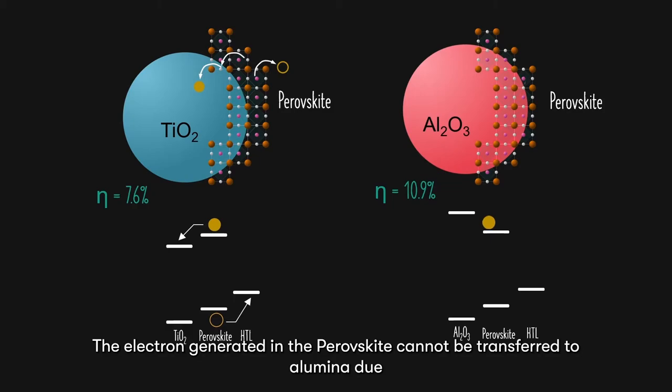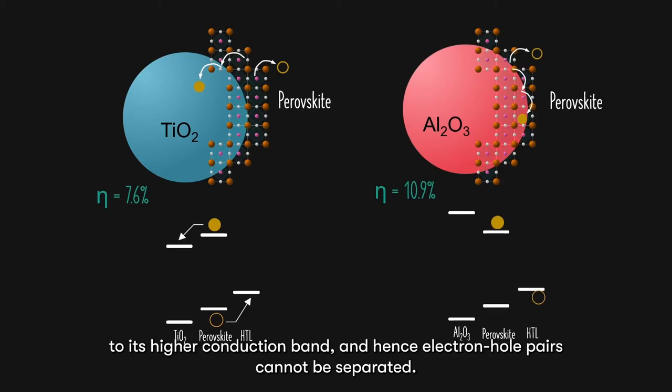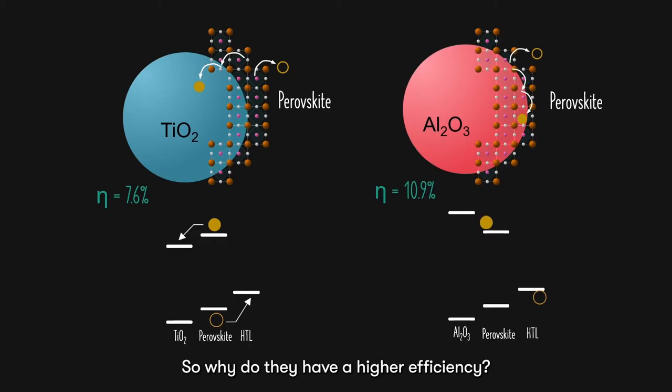This doesn't make sense at all. The electron generated in the perovskite cannot be transferred to alumina due to its higher conduction band, and hence electron hole pairs cannot be separated. So, why do they have a higher efficiency?